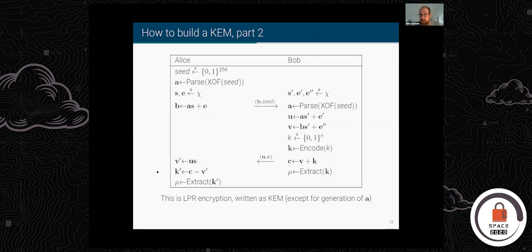As I wrote it down, this is LPR encryption — Lyubashevsky-Peikert-Regev, from around 2009 or 2010. LPR came up with this encryption scheme; I've written it as a key encapsulation here. In the encryption scheme, K wouldn't be chosen at random — it would just be a message encoded into the polynomial. The one thing that's different is I've added explicitly how the generation of the polynomial A is done.